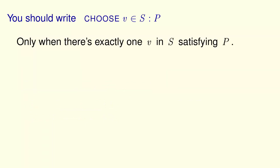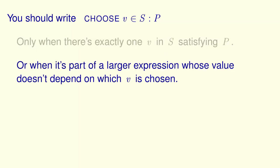You should write this choose expression only when there's exactly one value V in S satisfying formula P. For example, the way it was used in the definition of maximum of S. Or when it's part of a larger expression whose value doesn't depend on which possible value of V is chosen. We'll see an example of that later.